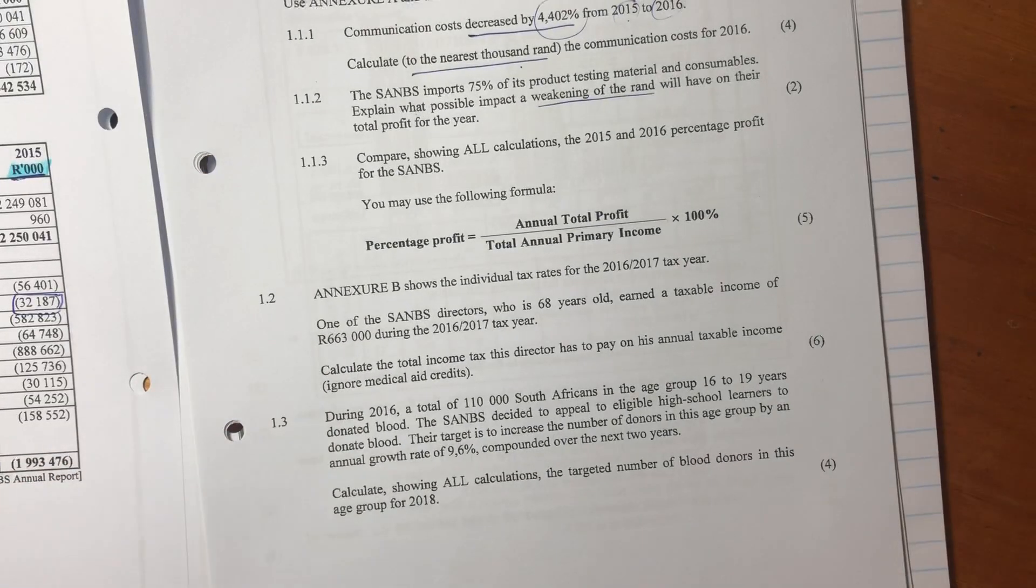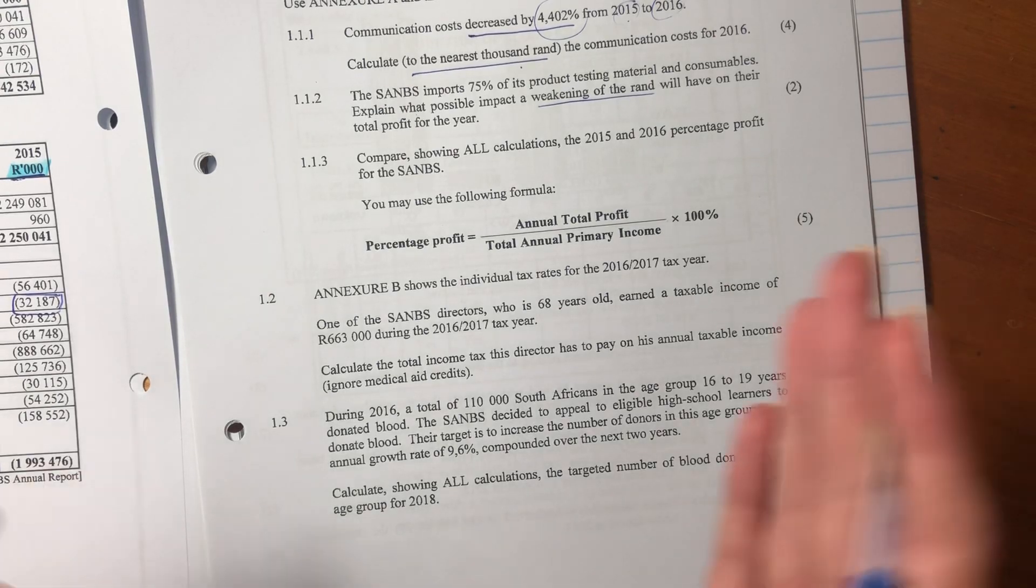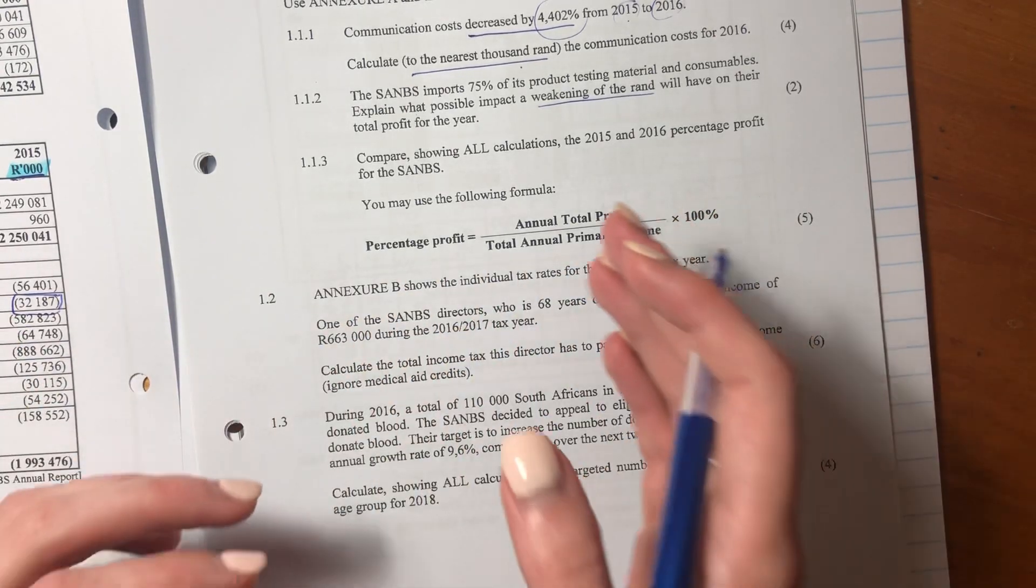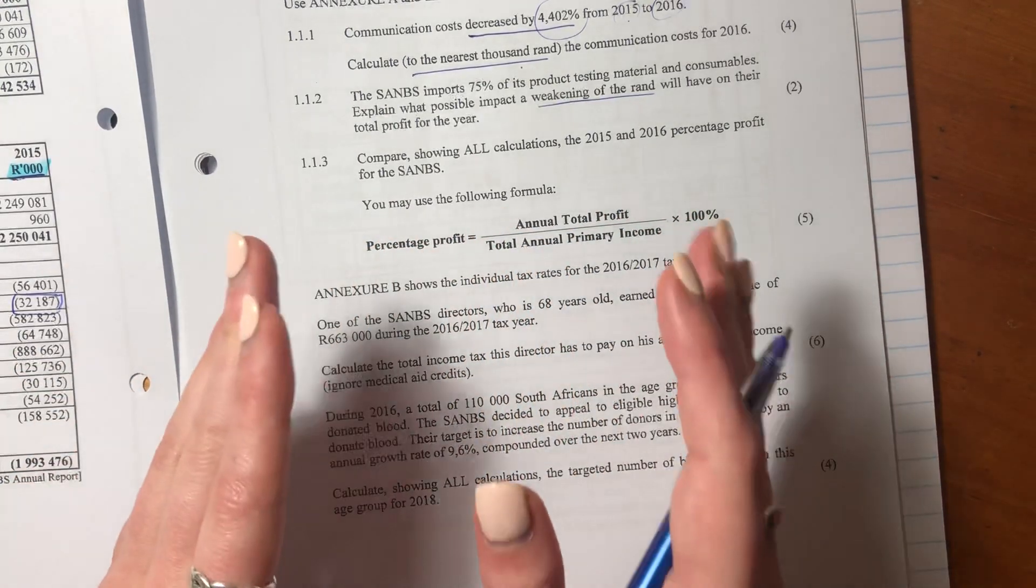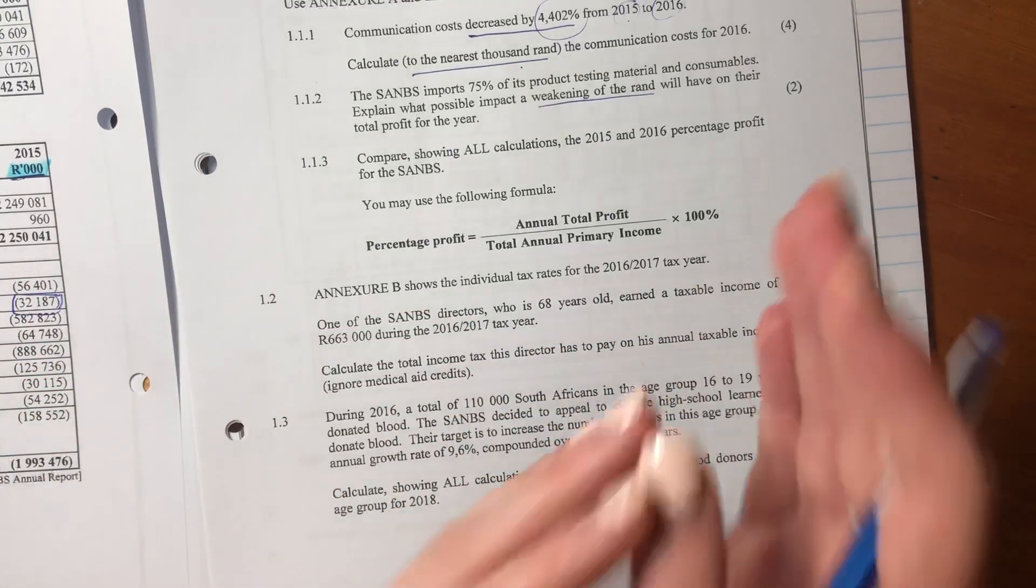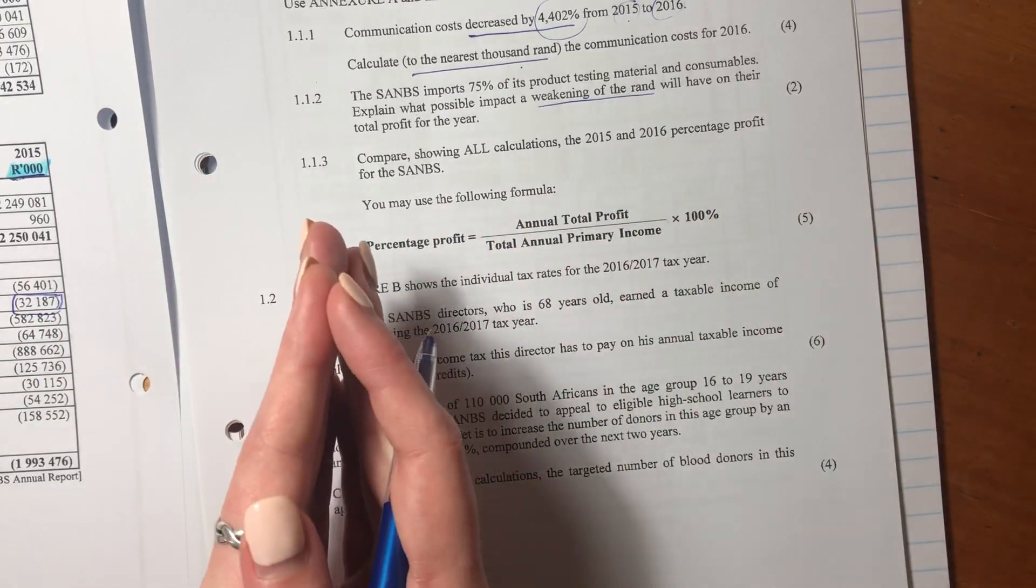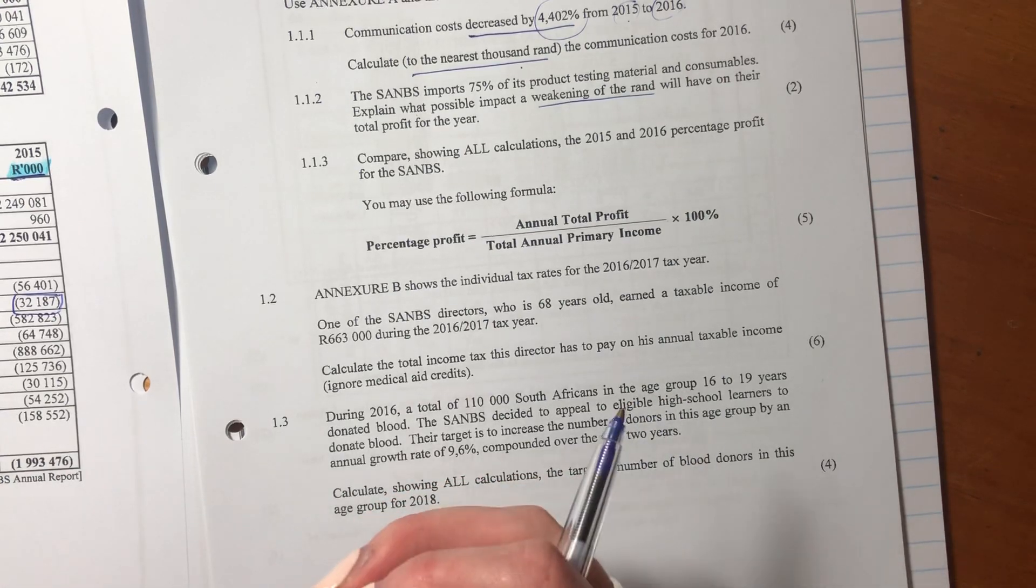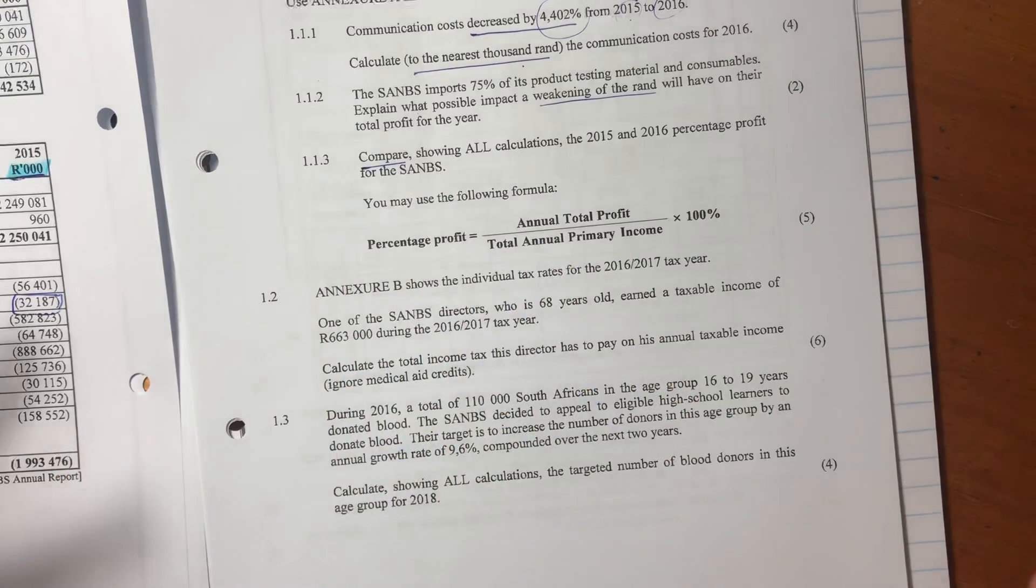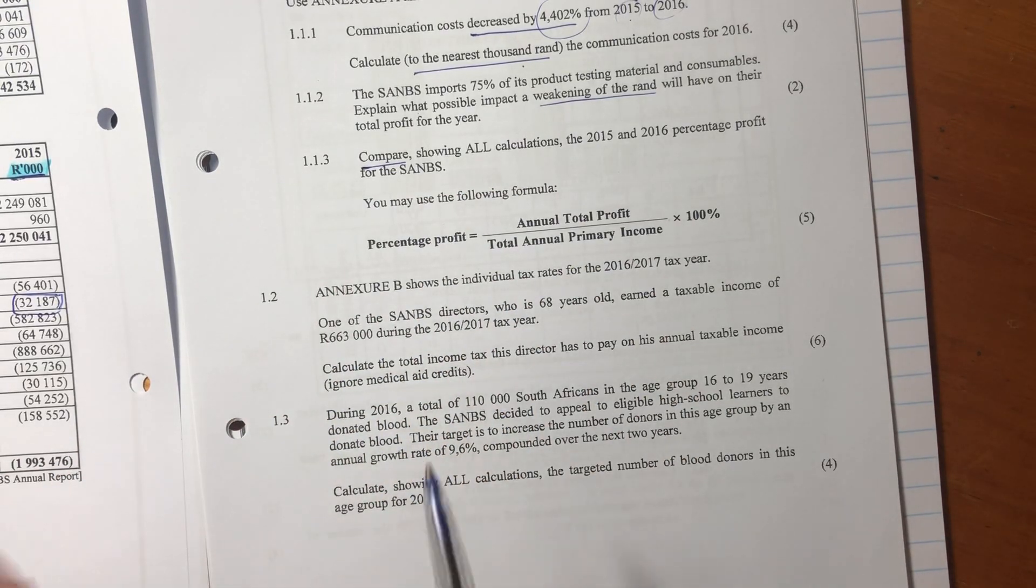Let's now go on to the last question for this specific video. So it says compare, showing all calculations, the 2015 and 2016 percentage profit for SANBS. You may use the following formula. So we're going to do it for two years. We're going to do it for 2015. We're going to do it for 2016. And we're going to compare the two. That's important because sometimes what students do is they forget to actually answer the question. They just do the math and they forget to make a statement about the math that they've done. So much of math literacy is actually being practical. Saying, what does this math mean. So don't forget that. Always bear that in mind. It's always about what does this math mean.